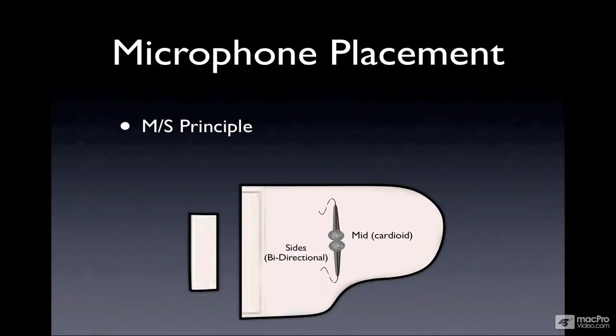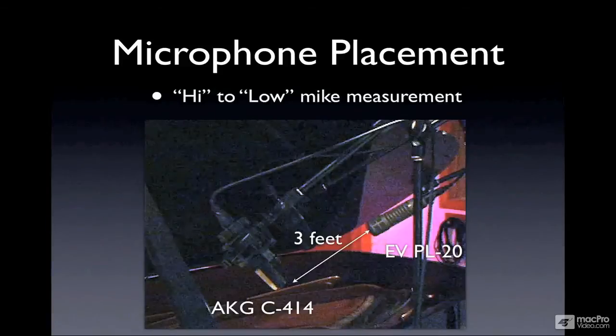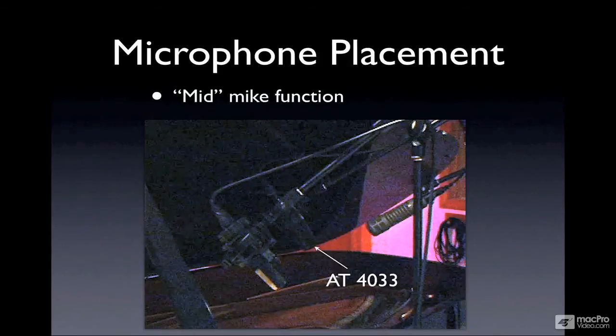With respect to the micing procedure we spoke of previously, the high to low microphone measurement should be of a 3-1 principle, that is 3 feet apart and 1 foot off the source. But placing a mid-mic in between both will often create a phase cancellation or a phase issue that should be evaluated.